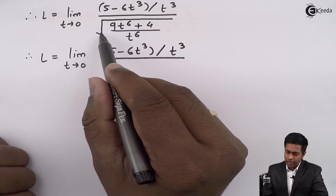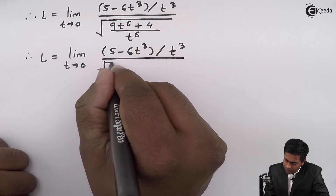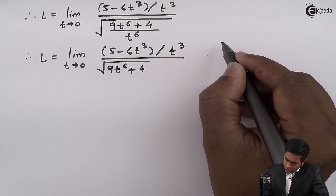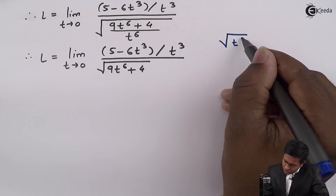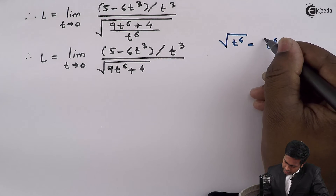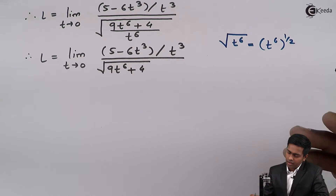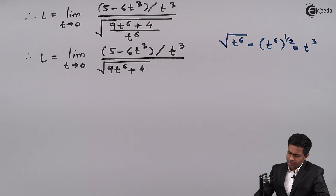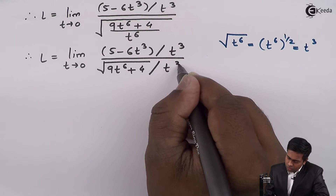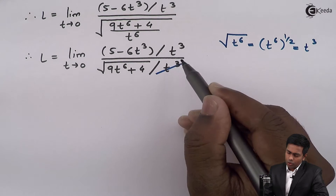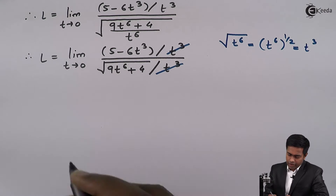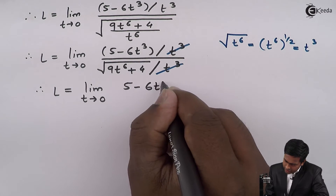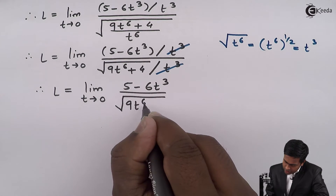Taking the square root of the denominator: we have the square root of 9t raised to 6 plus 4, divided by the square root of t raised to 6. Since square root is the same as raising to the power of one half, by the law of indices, square root of t raised to 6 equals t raised to 3. So the denominator becomes t cubed times square root of 9t raised to 6 plus 4. Cancelling t cubed from numerator and denominator, L becomes limit t tends to 0 of 5 minus 6t cubed upon square root of 9t raised to 6 plus 4.